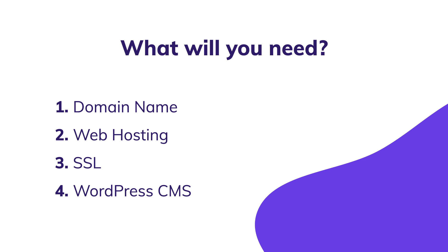The third thing you're going to need is an SSL certificate. Of course it's not necessary, but if you want to have a professional looking website, I highly recommend you get one — and in most cases you can get it for free. You may remember the green padlock next to HTTPS; nowadays in Google Chrome there's just a gray padlock indicating the connection is secure and the website has an SSL certificate. And the last thing we're going to need is a content management system. Since this course is all about WordPress, that's exactly what we are going to use.